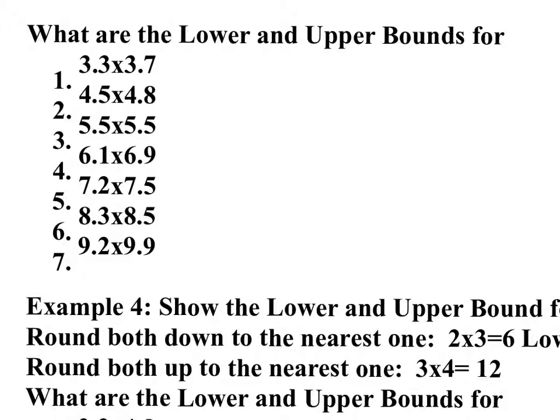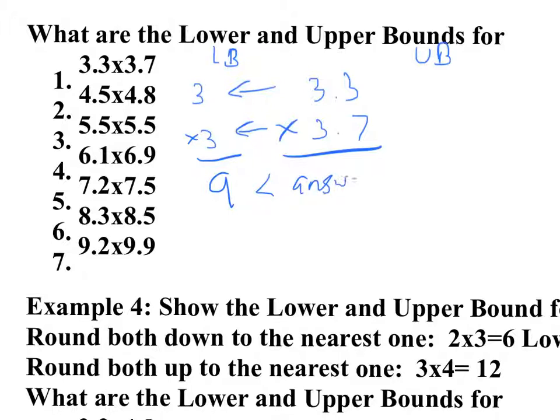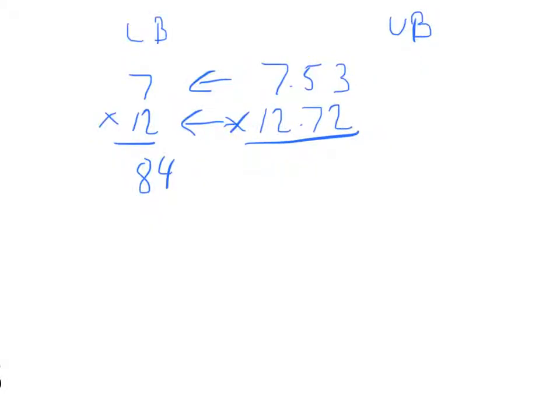So let's say we're going to do 3.3 times 3.7. We can round down to 3 times 3. So we know that our answer is going to be more than 9. And we round up to 4 and 4. And we know that our answer is going to be less than 16.